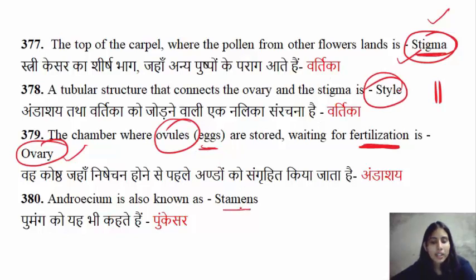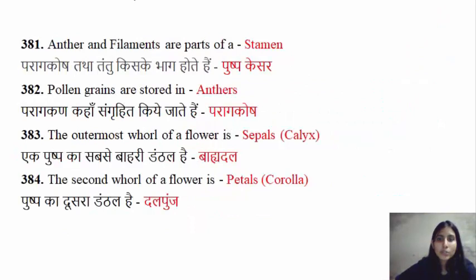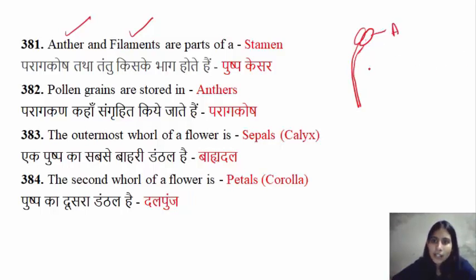Androecium — the second name is stamen. The stamen has two parts: the anther is present on the top, and the stalk below it. Pollen grains are stored in the anther.